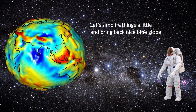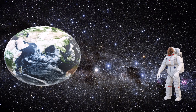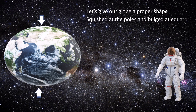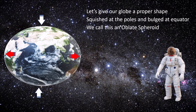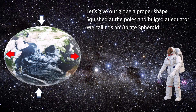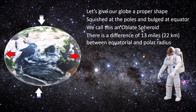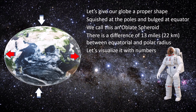Just imagine how difficult it would be to measure things on this wonky surface. Let's simplify things a little bit and bring back the nice blue globe. Let's give our globe a proper shape — squished at the poles and bulged at the equator. We call this an oblate spheroid.